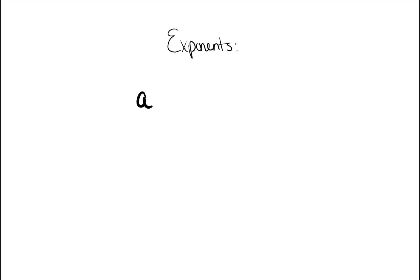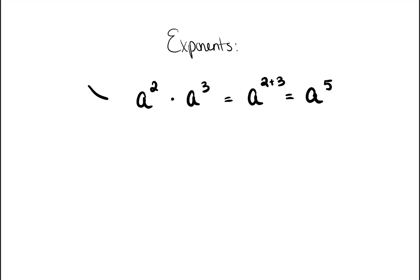The first rule is when you're multiplying exponents. Say I have a squared times a to the third power — you add the exponents. So it would be a to the two plus three, which is a to the fifth power. The note you want to write is: when you multiply, you add the exponents.